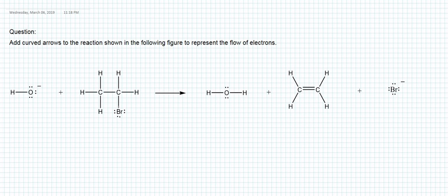We can clearly see there is going to be a bond formation between hydroxide and one of the hydrogens. The bromine has to leave the molecule, so the bond between carbon and bromine has to be broken. We are also seeing that a new bond is forming between carbon and carbon, which is the second bond or double bond.